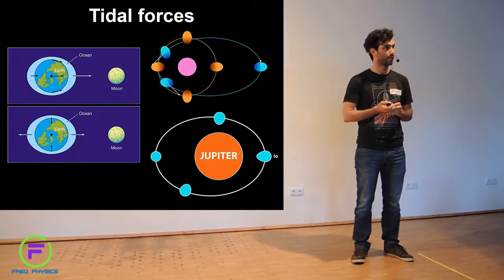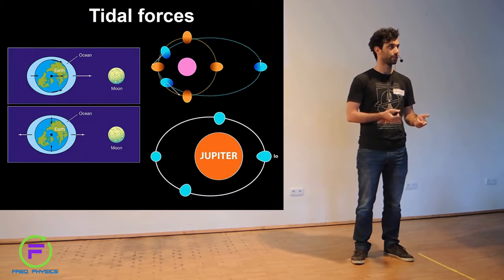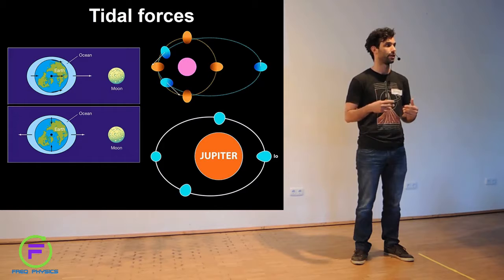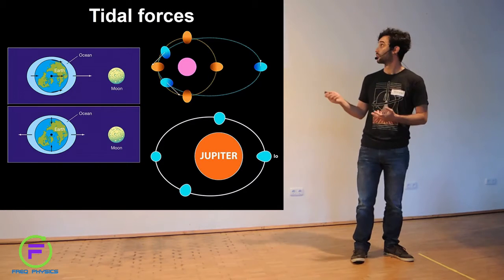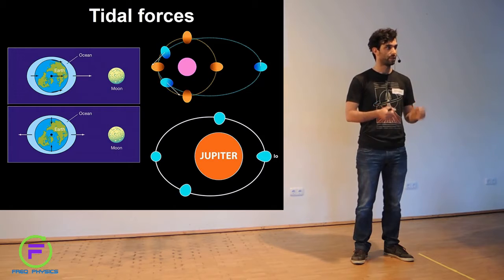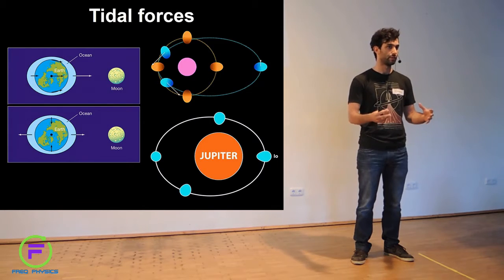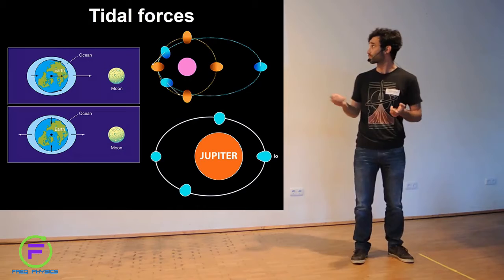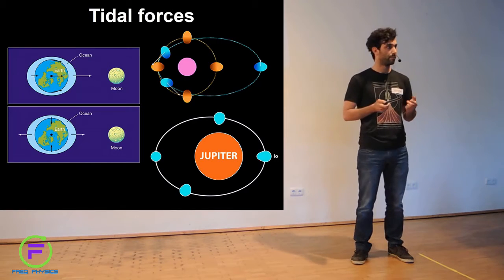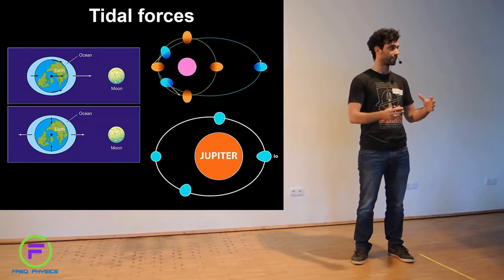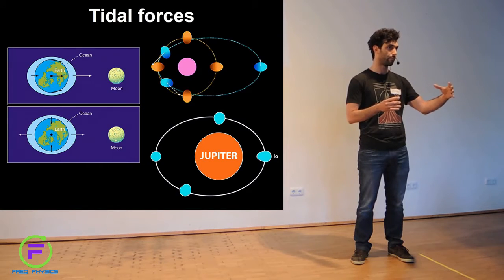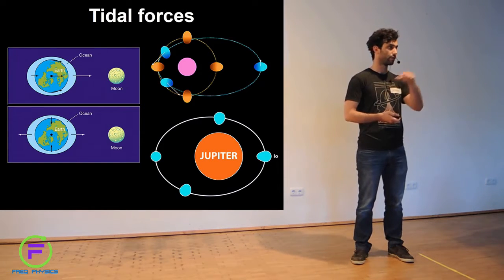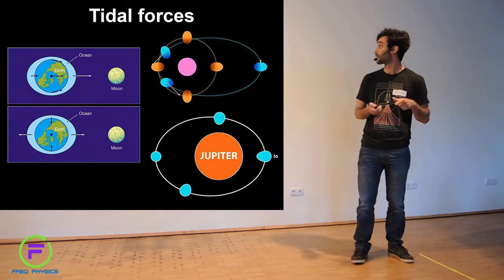To explain this we need to have tidal forces. We all know that the moon pulls on the Earth and deforms the Earth in a way that it pulls the ocean, and then we have the tides that we know. In place of the moon, imagine having this giant planet in the center of its own moon system pulling on each of the moons, so the moons in turn are deformed. But not only that, the moons do not have perfectly circular orbits. They go a tiny bit further at some point in the orbit and a tiny bit closer at other points, so they are deformed in different ways throughout the orbit.